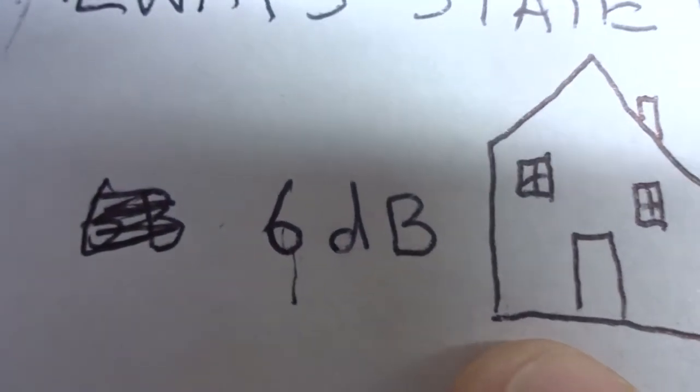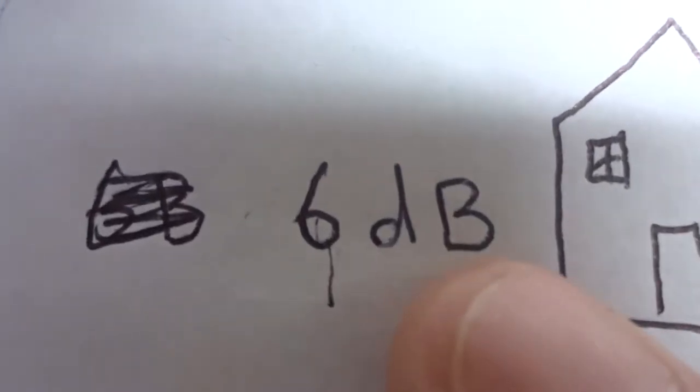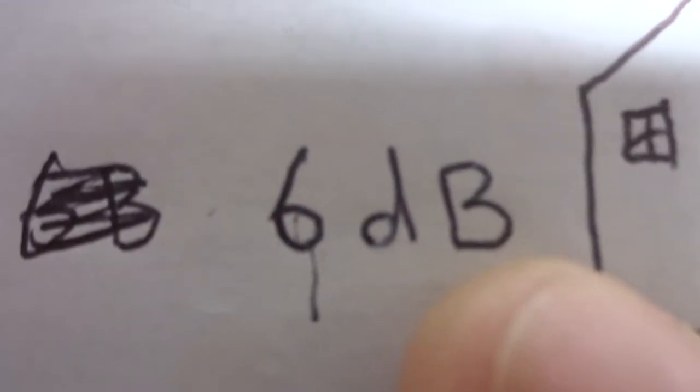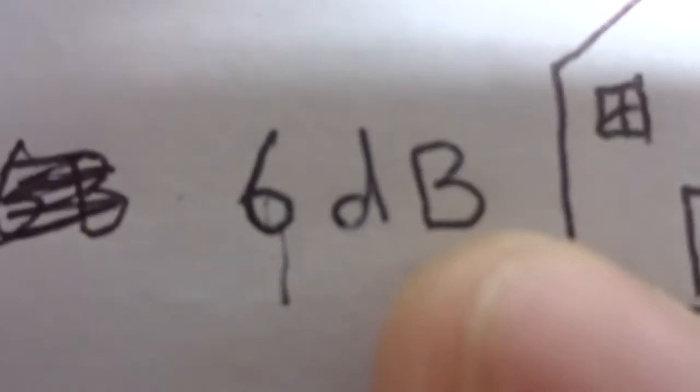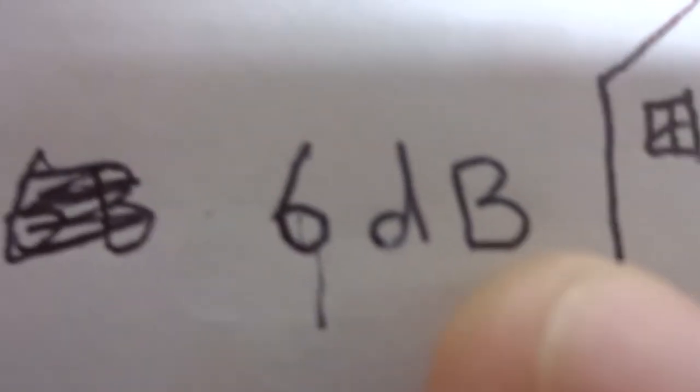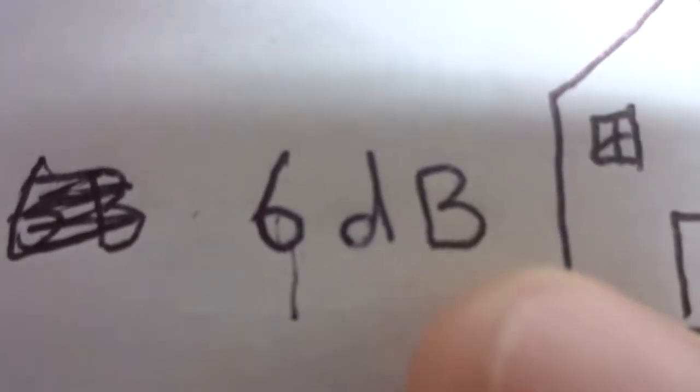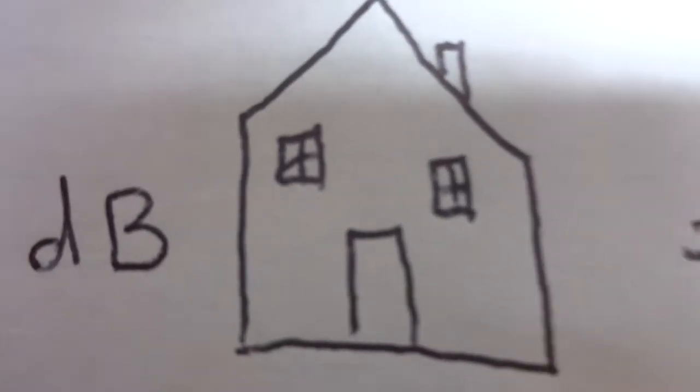Or maybe a house. 6 decibels halves the quantity. So if you have a 6 decibel value for 100 watts, your output will be 50 watts, half. And 50 watts is lost. If you have 6 decibels of a house, you wind up with half a house. I do have a sense of humor.